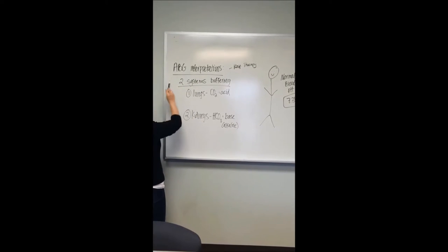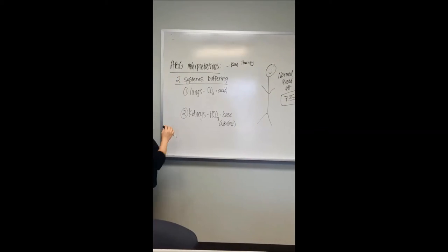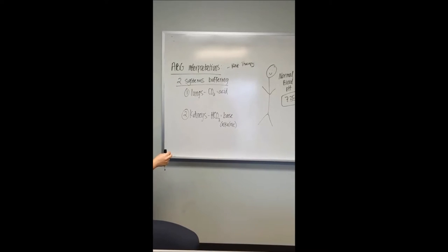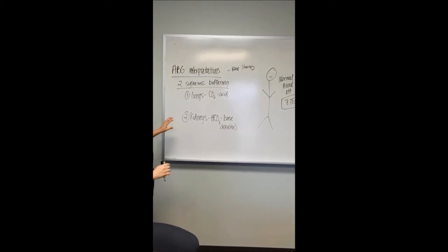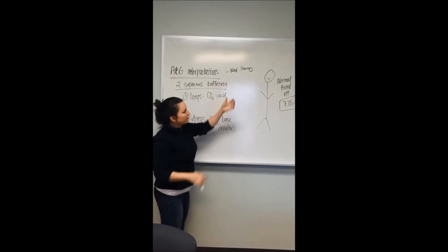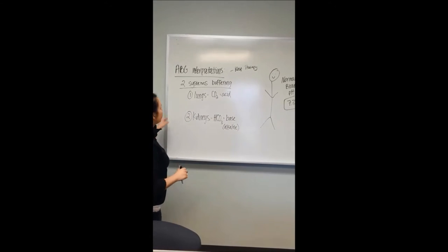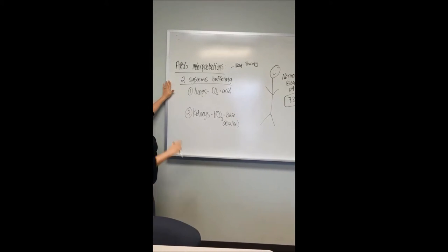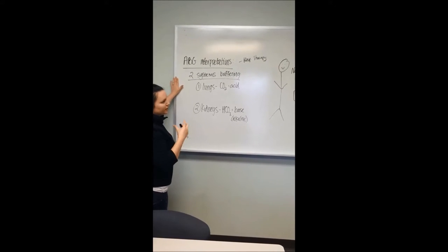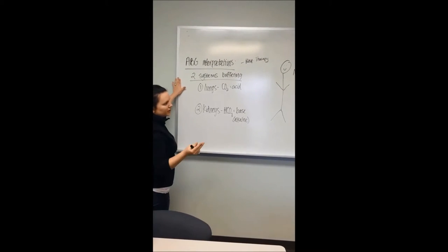ABG interpretations. ABG arterial blood gases are blood readings to tell us about the body's pH. They're drawn by respiratory therapy, usually from the radial arterial line. With the numbers that pop up, we read, interpret, and then report to the RN or the doctor.